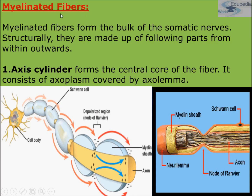Myelinated fibers means neuron fibers which are covered by a myelin sheath. The myelin sheath is an electrically insulating layer wrapped around the axon, and it increases the speed of electrical conduction. Electrical conduction increases many folds when the myelinated sheath is present.